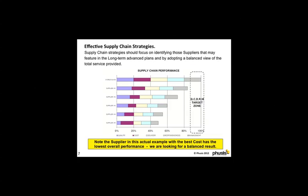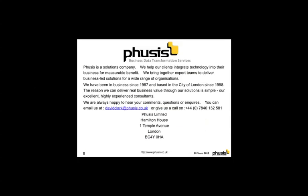Total supply chain performance is about having a balanced approach to all dimensions of quality, cost, delivery, responsiveness, and management. These are real client results, and you will note supplier number five with the best cost has the worst overall performance. So when you're given the challenge to improve the speed to market of your products, keep your focus on all aspects of the supply chain. Thank you for watching — if you would like more information, please contact us at Fuchsius.